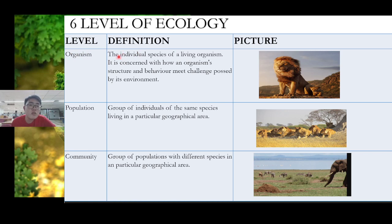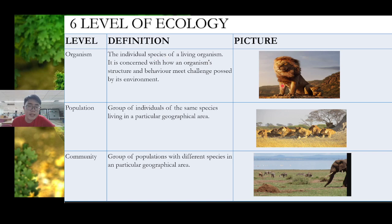The definition of organism is the individual species of a living organism. It is concerned with how an organism's structure and behavior meet the challenges posed by its environment. It is just one individual species — like a lion, one lion — one organism only.